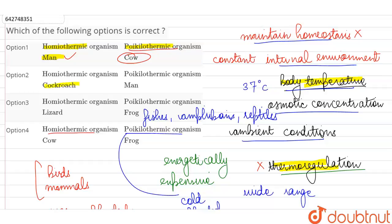Now, they are calling cockroach homeothermic which is not the case and they are calling man poikilothermic. Again, wrong.